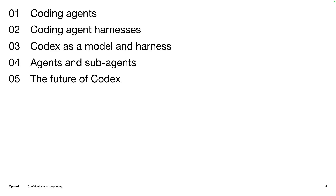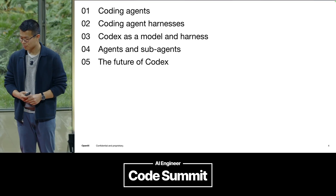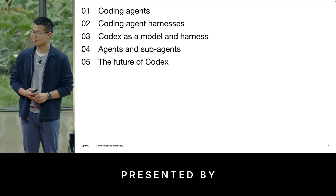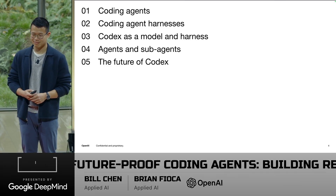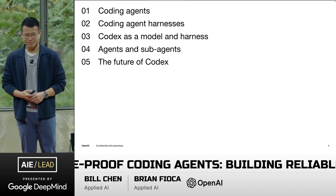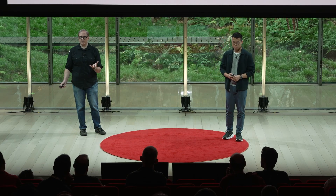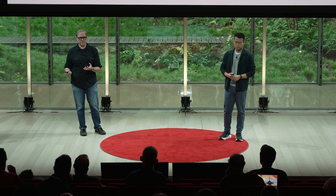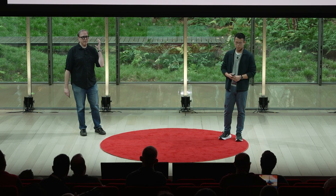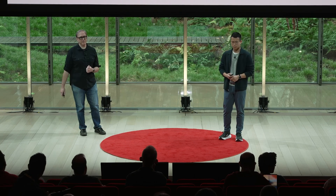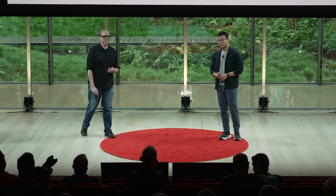Here's what we're going to go over today. We'll start with the anatomy of a coding agent, especially going into the details of models and harnesses and how they work together. We'll share some lessons that we learned from putting them together ourselves, and we're specifically going to talk about Codex, which is our own coding agent. We'll talk about emerging patterns that we're seeing from all of you for using agents like Codex in your own products. And lastly, we'll talk about what to expect from Codex in the future so that you can build along with us.